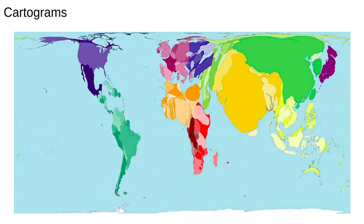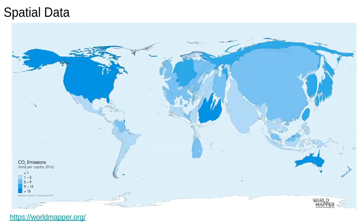A newer type of map projection is called a cartogram. This distorts the areas or the distances on the map so they're equal to some other target values. The example shown here is probably the most famous — in it, every country has an area proportional to its population. So China and India are now huge, while Russia, though geographically huge, has a much smaller population and is drastically squashed. Note that Antarctica is on this map; since Antarctica has a population of about 12, some artistic licence is also applied. Cartograms require a fair amount of computation and specialized libraries. I'm not really aware of a solid Python library for making them, however you can find implementations out there, and you can also have a look at worldmapper.org for some other examples.